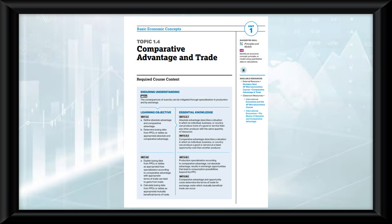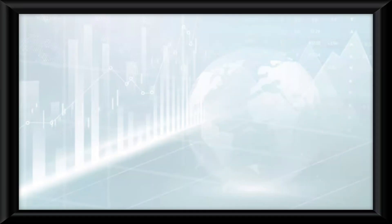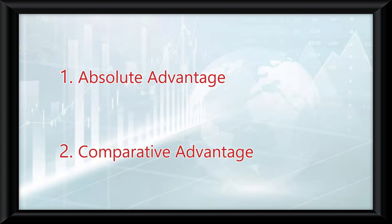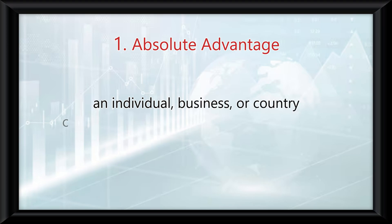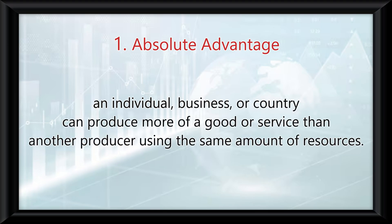Topic 1.4 is all about different advantages in trade, so let's start with defining two terms: absolute and comparative advantage. Absolute advantage occurs when an individual, business, or country can produce more of a good or service than another producer using the same amount of resources.